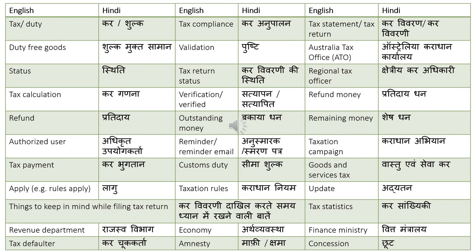Taxation campaign: 'karadhan abhiyan'. Goods and services tax: 'vastu evam sevakar'. Update: 'adhyatan'. Tax statistics: 'kar sankhiki'. Finance ministry: 'vitta mantralaya'. Concession is translated as 'chhut'.